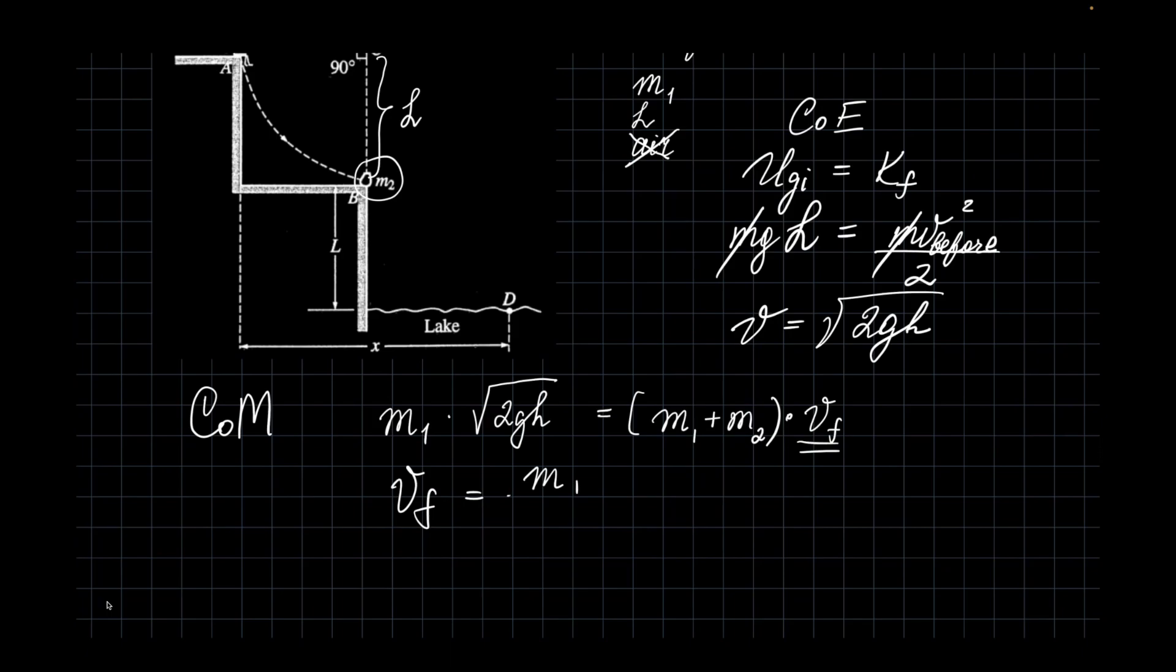Really? So it's the ratio of one mass to the sum of masses to the original V. And then M1, M1 plus M2, times the root of 2gl.